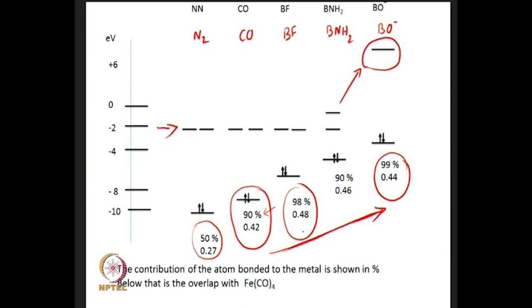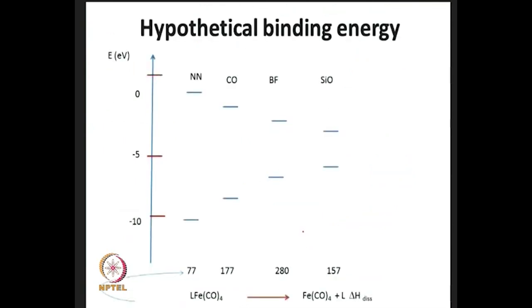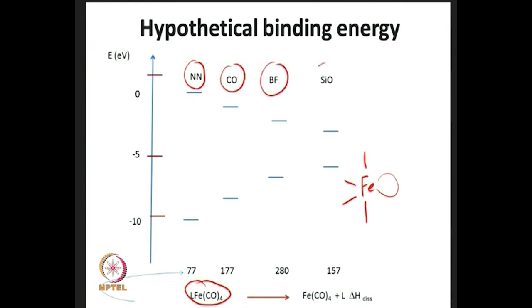Calculated binding energies for the hypothetical fragment Fe(CO)₄ with various ligands show that BF has a maximum bond energy of 280 kcal/mol compared to 177 for CO and 77 for N₂. It has recently been possible to make complexes with BF. Dinitrogen (N₂) is also a ligand used in chemistry with significant progress; its ionization potential is 15.8 eV, only slightly higher than CO at 15 eV, making it a reasonably good donor, though not a great π acceptor.